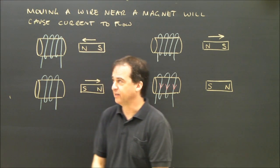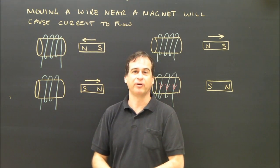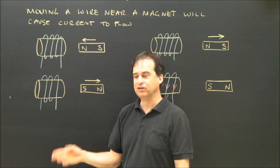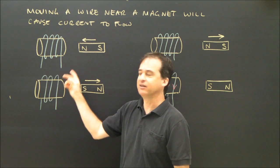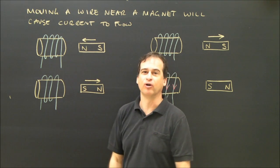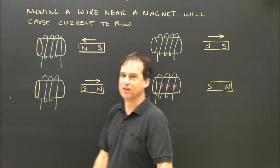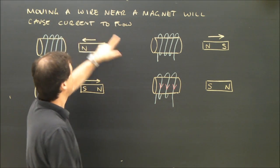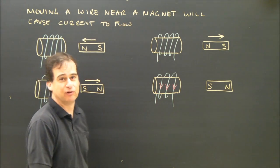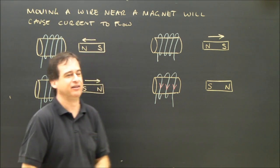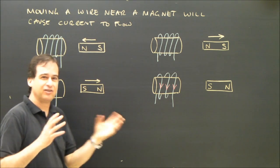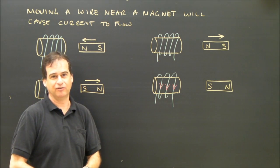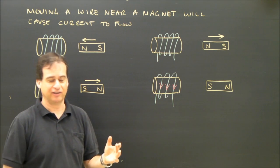What we're going to look at is how we generate electricity. This is called Lenz's Law — we want to figure out when a magnet is moving near a coil, which way will electricity flow. The first thing to remember is that moving a wire near a magnet, or moving the magnet near the wire, will cause current to flow. The question is: which way is electricity flowing?